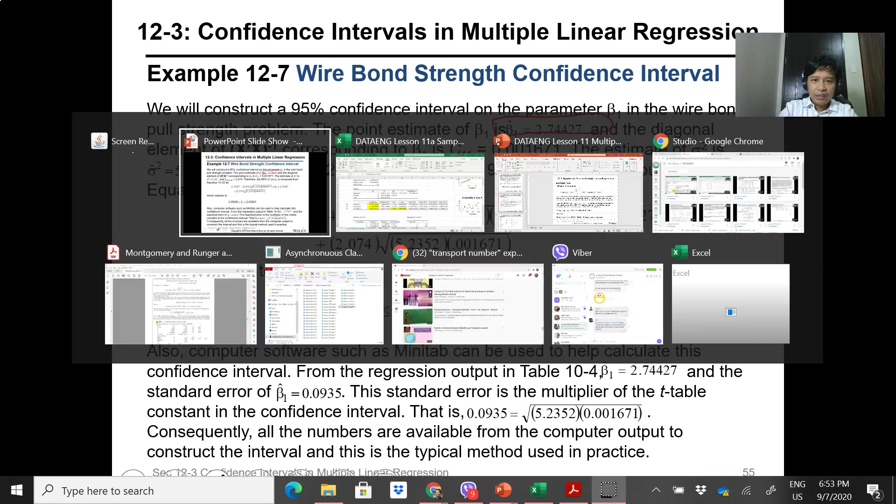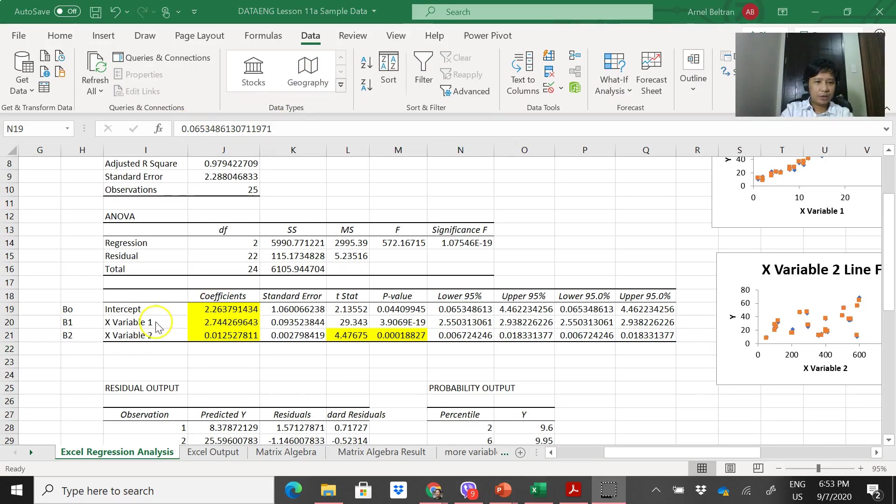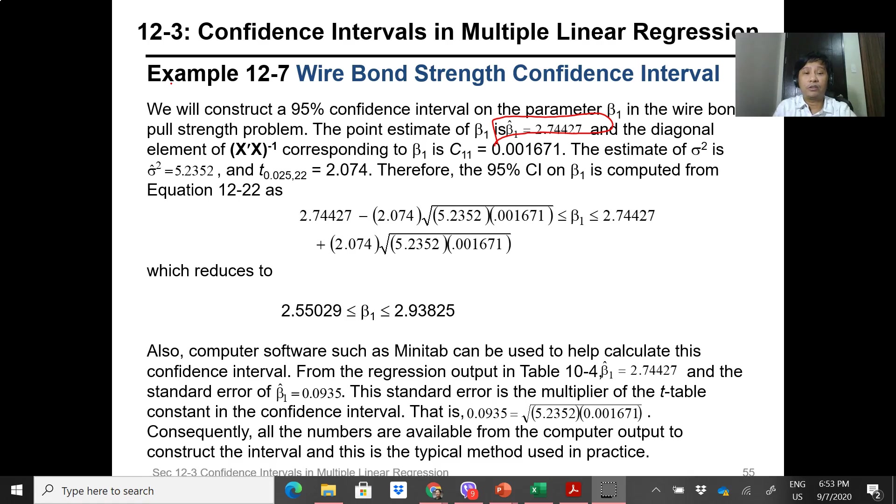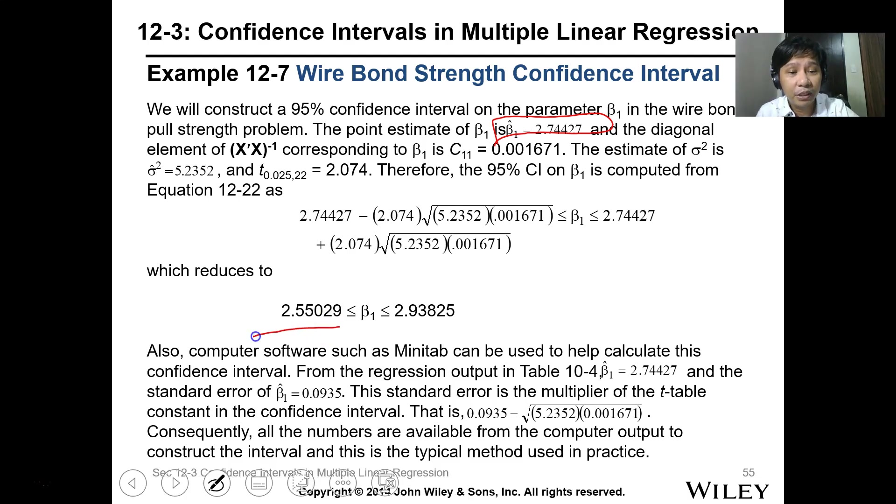So this is the question - the coefficient being asked is for β1. So β1, variable 1. So this is it, 2.74 - upper and lower limit. At 95% confidence interval, it's 2.55 to 2.93. So that's 2.55 and 2.93.